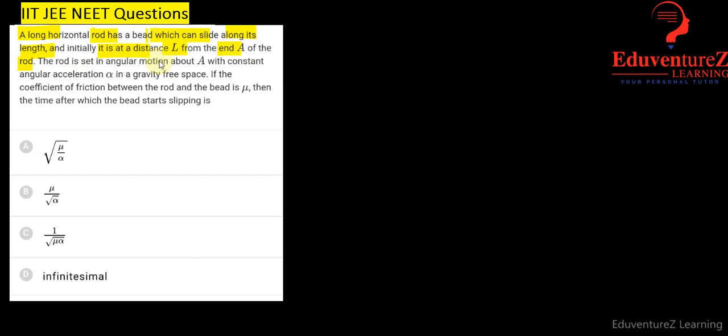The rod is set in angular motion about A with constant angular acceleration alpha in a gravity free space. If the coefficient of friction between the rod and the bead is mu, then the time after which the bead starts slipping is?